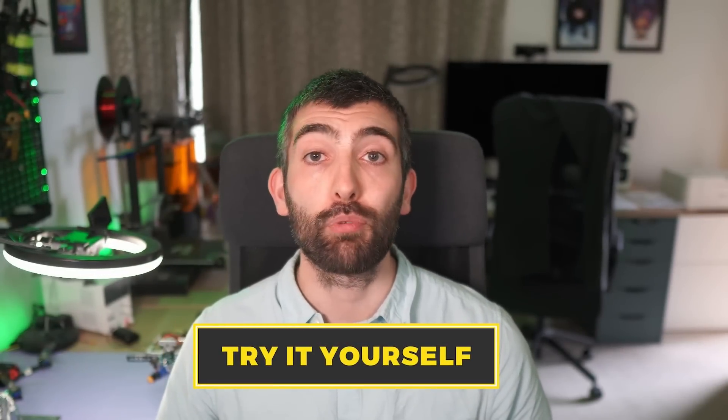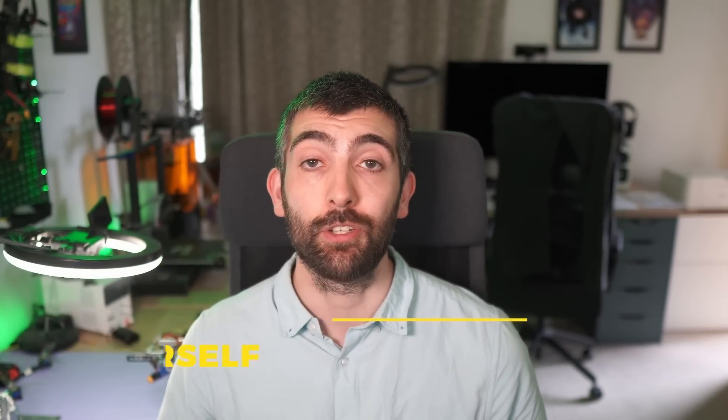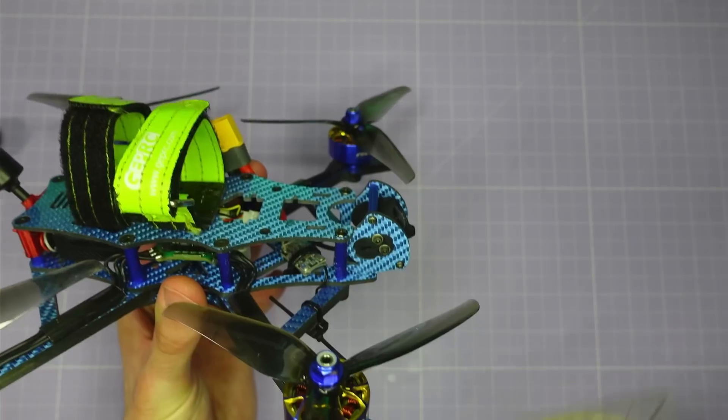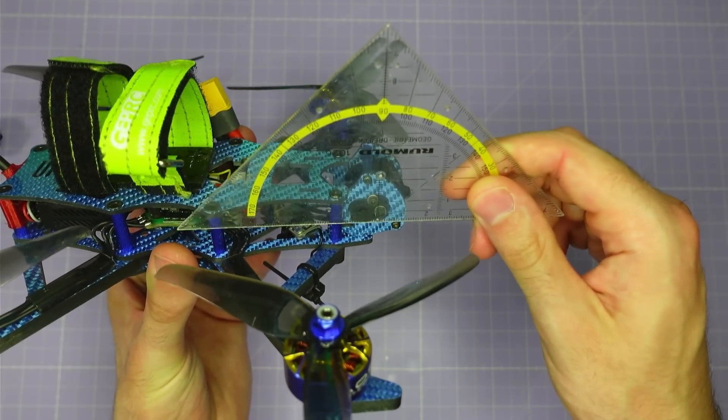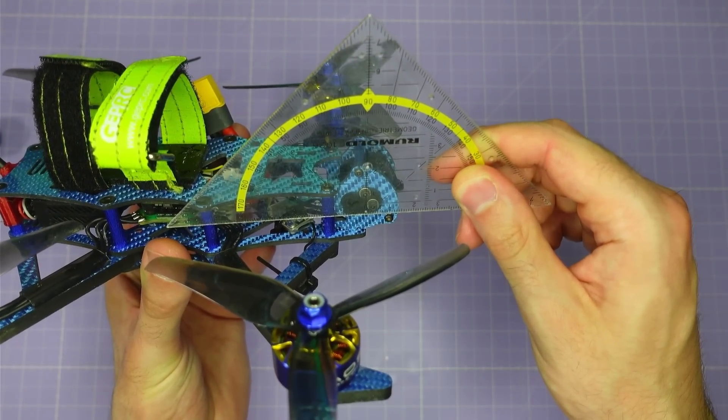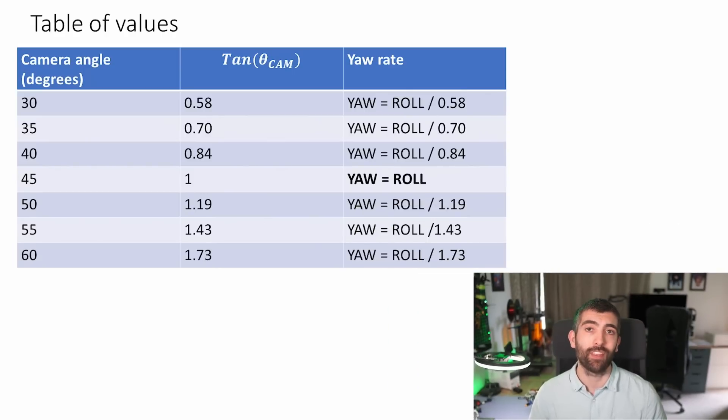If you want to try this out yourself, the process is really easy. First, find your camera up tilt angle — you may already know it from your GoPro mount, or you may need to measure it using a protractor or by drawing some triangles and taking measurements. Once you know it, calculate the tangent of that angle using a calculator, or read it off the table I've prepared. Write that down and then we can dive into Betaflight and set up your yaw rates.